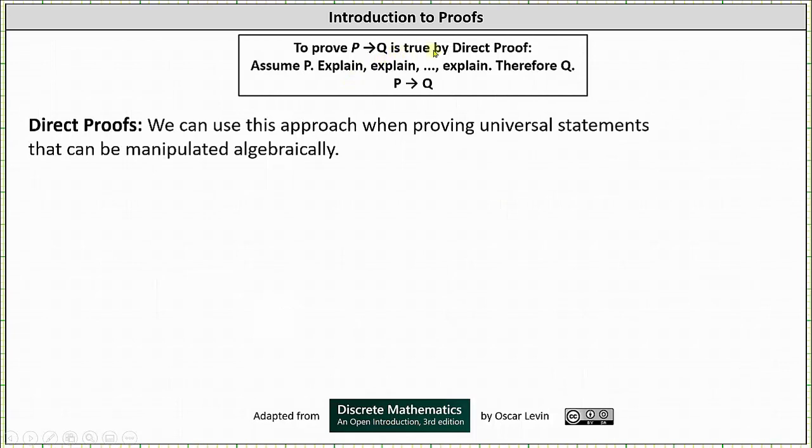To prove if p then q is true by direct proof, again we assume p, explain, explain, explain, therefore q is true. Direct proofs take the form of if p then q. Direct proofs are a great approach when proving universal statements that can be manipulated algebraically. As an example, let's prove that all integers n, if n is odd then n² is odd.